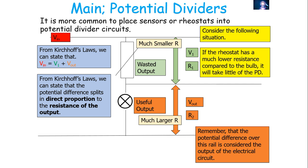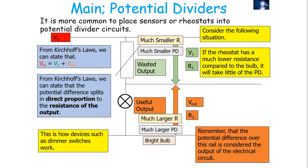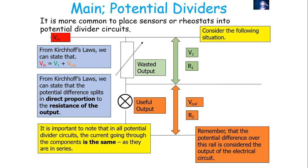Conversely, if the rheostat is set to a much lower resistance compared to the bulb, it takes very little of the potential difference. The bulb now has a much larger resistance in comparison, so it takes a lot more of the potential difference — leading to a bright bulb. This is how devices like dimmer switches actually work. It's important to note that in all potential divider circuits the current going through all components — in this case the rheostat and the bulb — is the same, because they're in a series circuit with a single path.